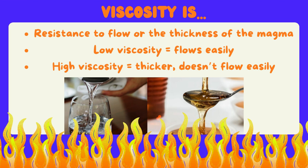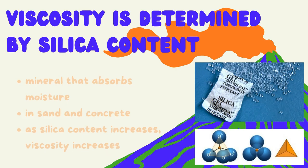Viscosity refers to the resistance to flow, or in this case, the thickness of magma in a volcano. If something has low viscosity, it's going to flow easily, like water. If something has high viscosity, it's thicker and it won't flow as easily, like honey.